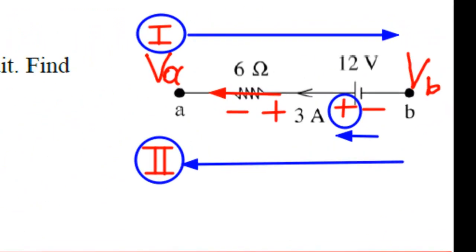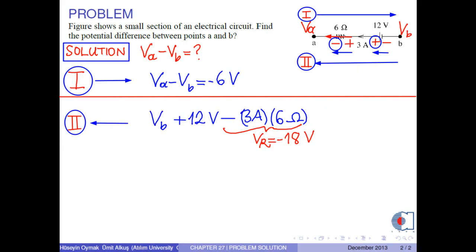For the resistor, the leftmost sign is negative. Therefore, the voltage difference is calculated as negative 3 amperes times 6 ohms. Now, we reach the potential at point A.